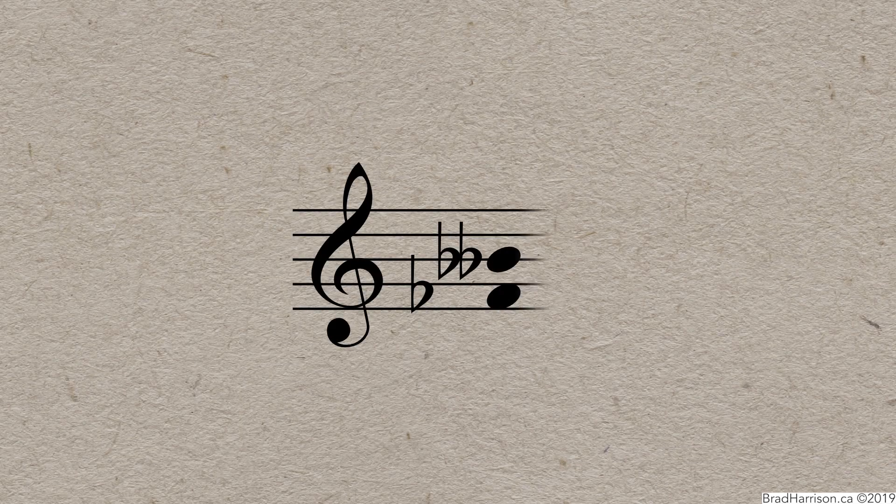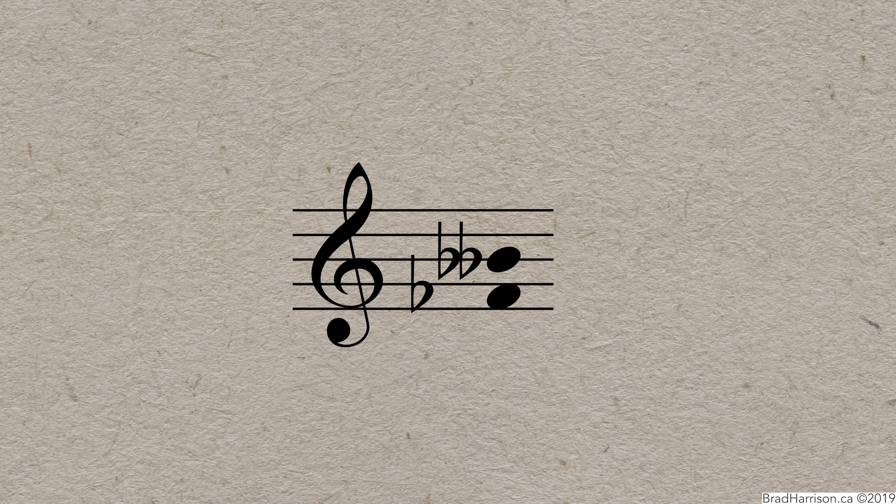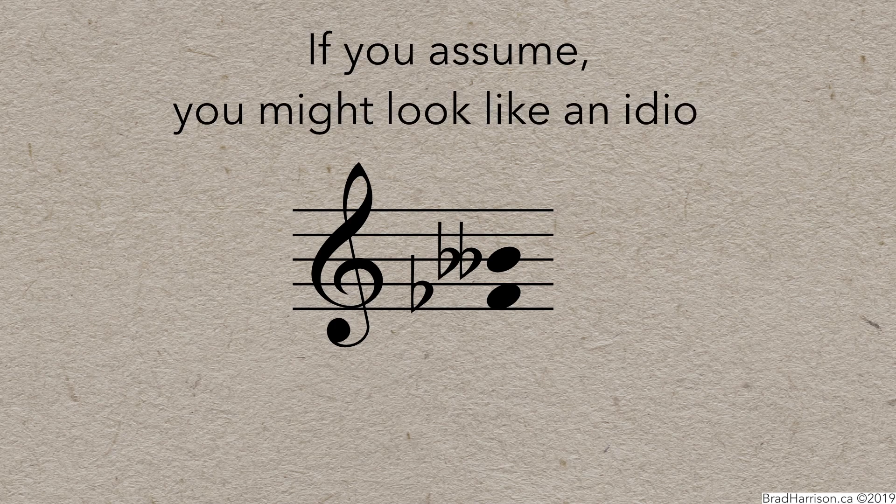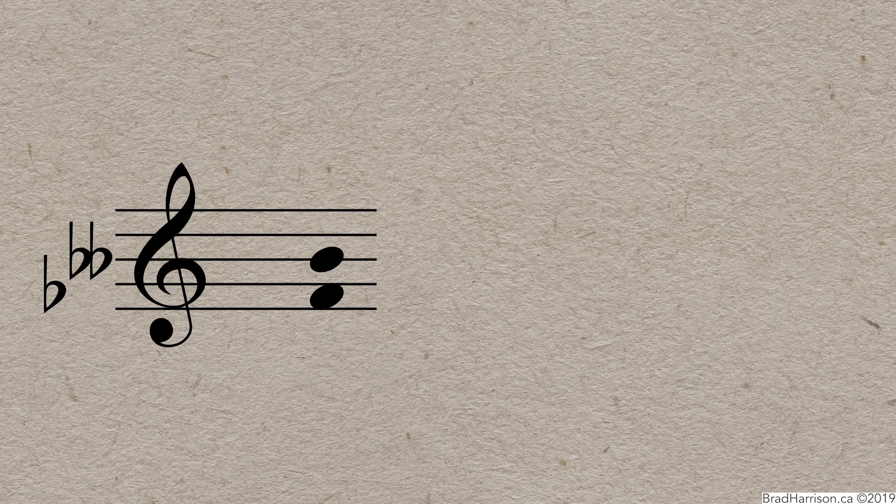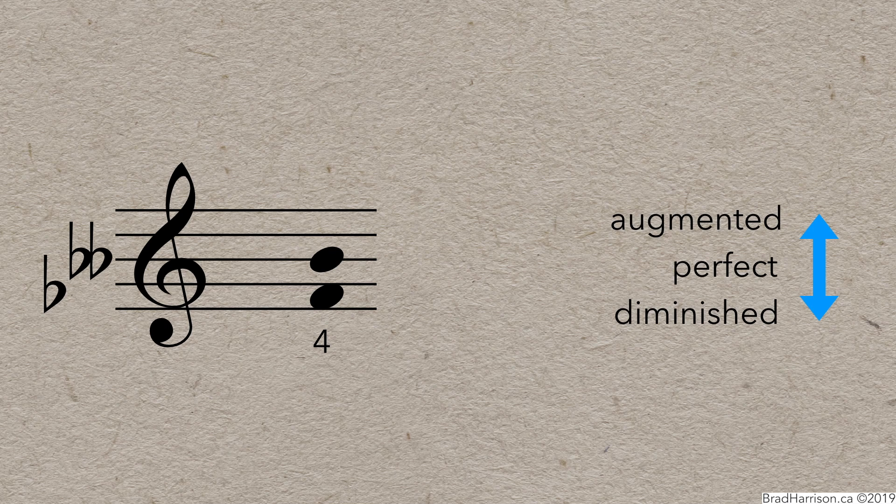How about another weird one, like F-flat to B-double-flat? You might assume that double-flat means diminished, but remember the old saying, if you assume, you might look like an idiot. First, ignore the accidentals and see that F to B is a 4th. In F-major, B is flat, so F to B-natural would actually be an augmented 4th.